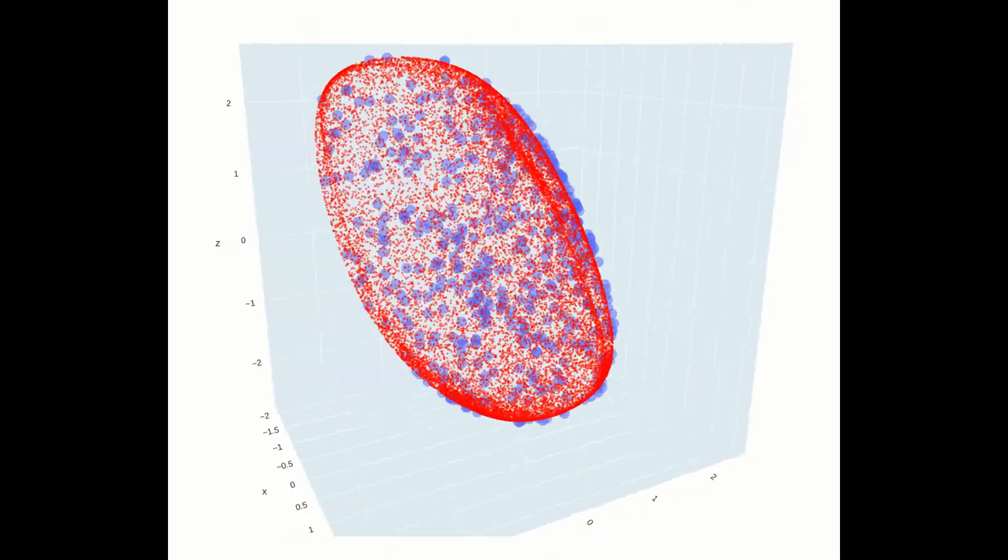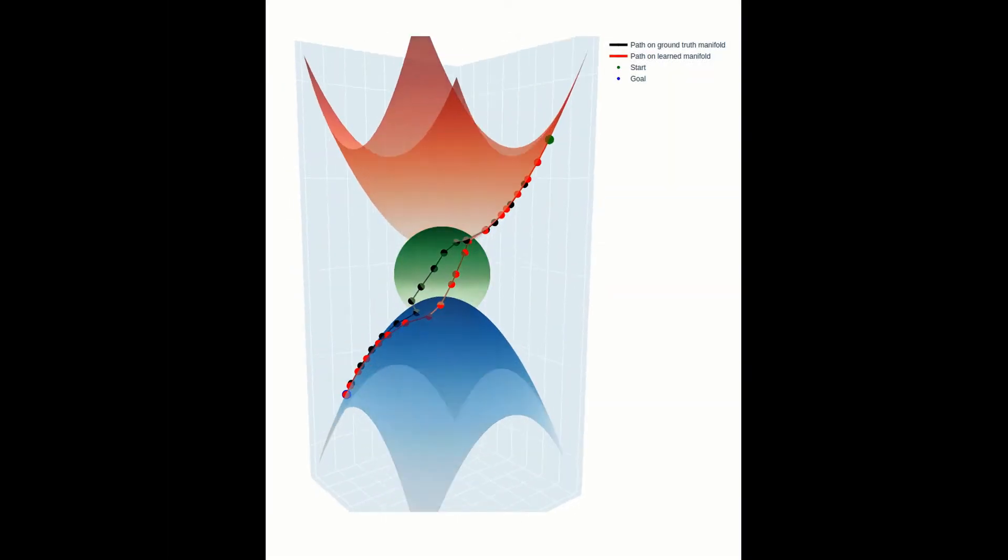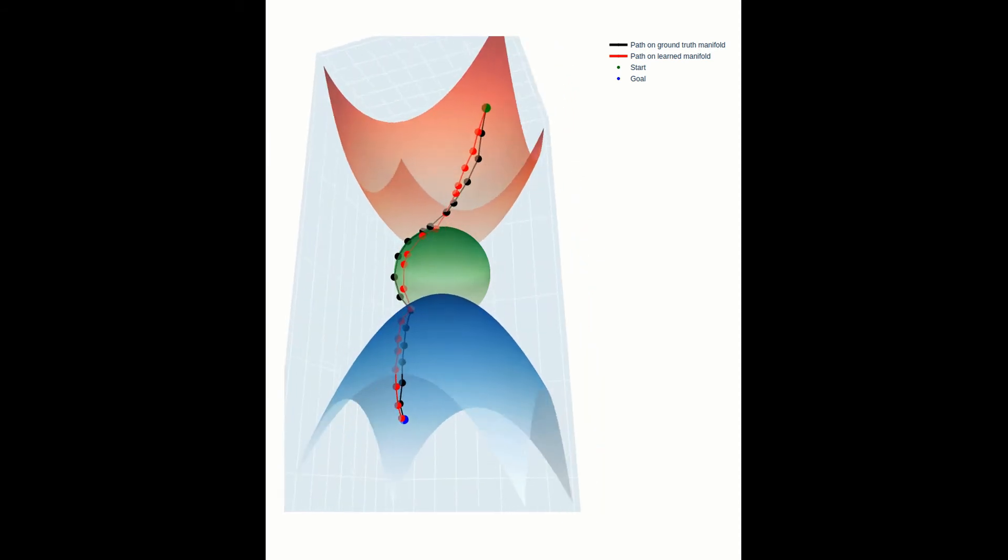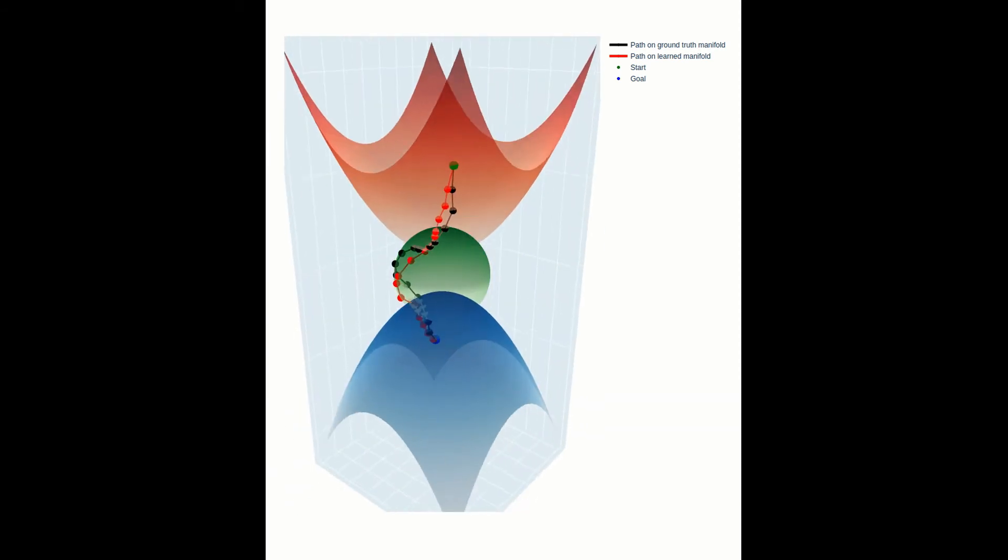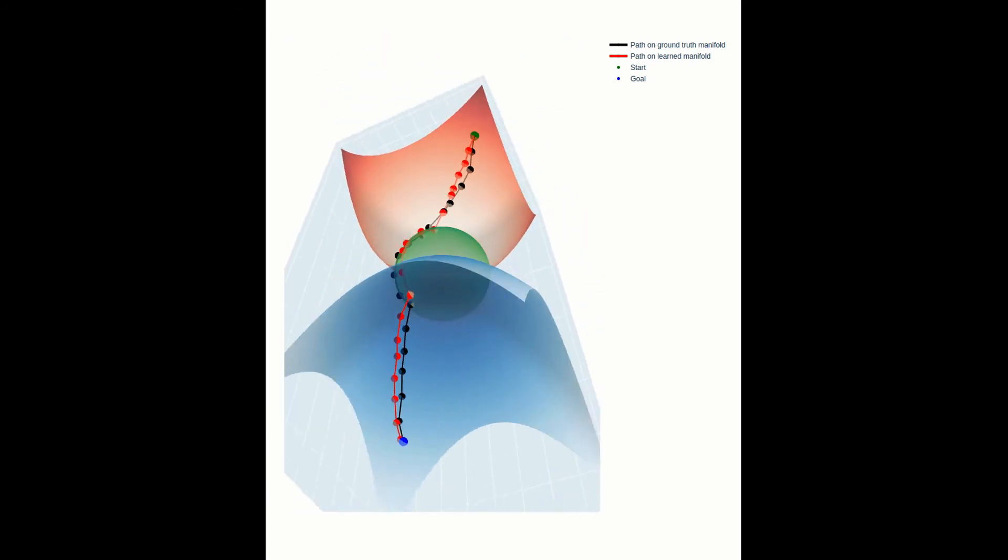We then incorporate ECOMAN into a sequential motion planning framework. Here, a path is planned along three sequential manifolds, two analytically defined paraboloids connected by one learned sphere constraint. The paths are similar in length, and both lie on the constraint surfaces.